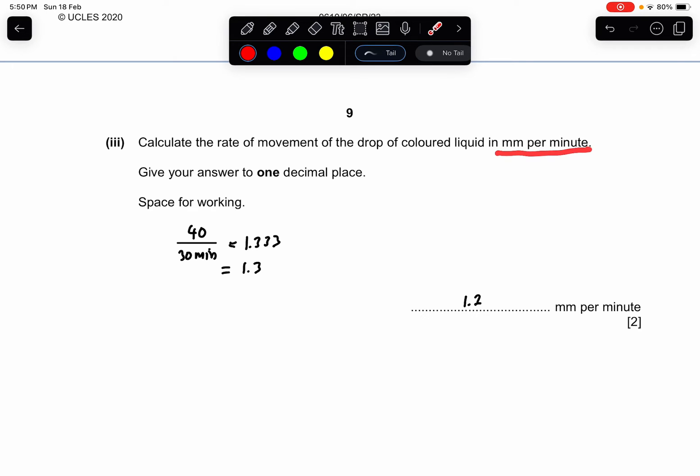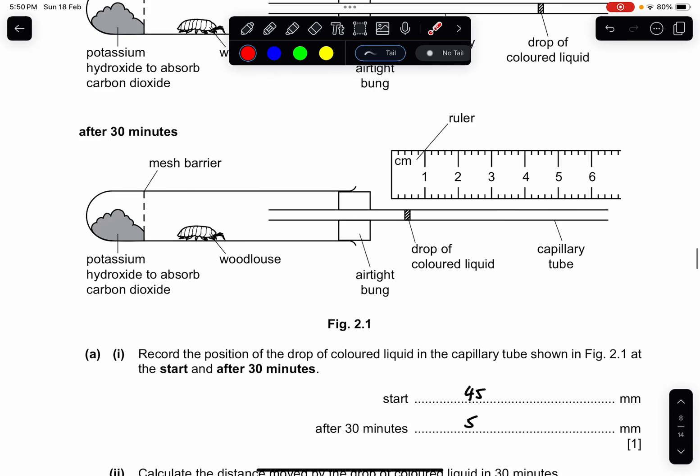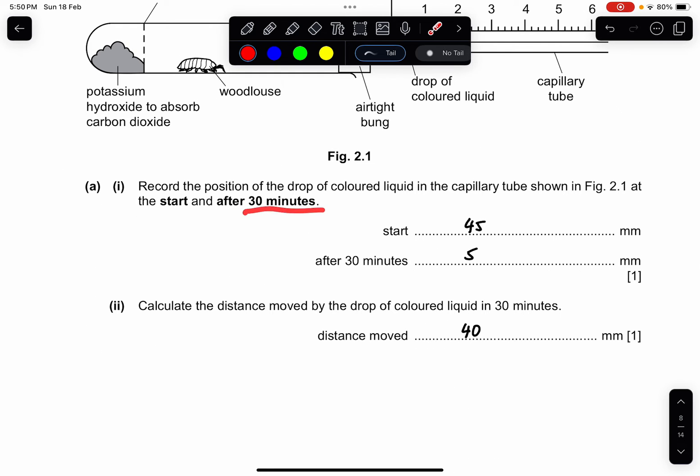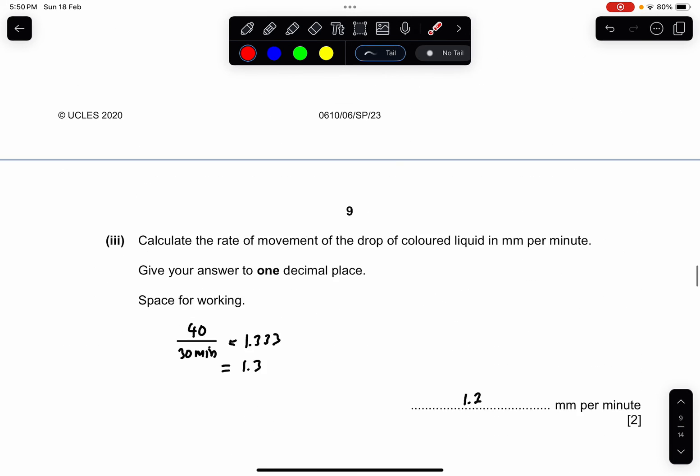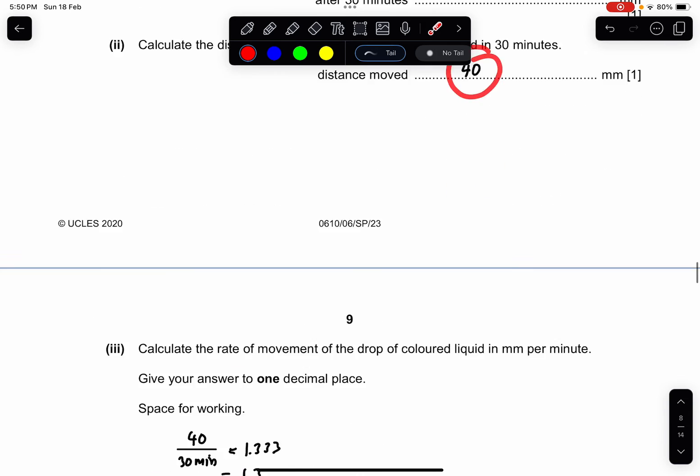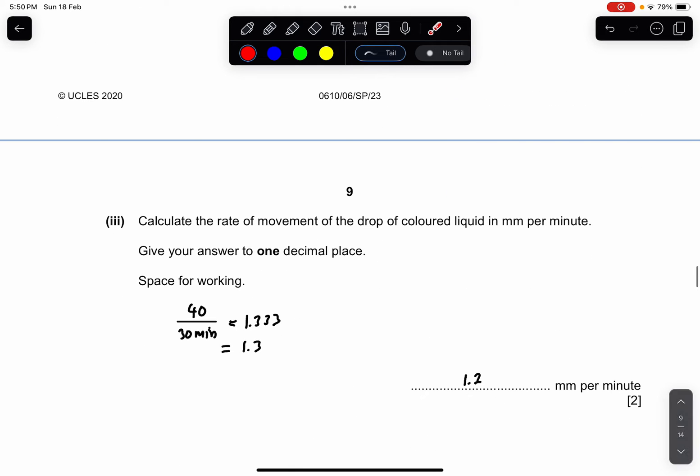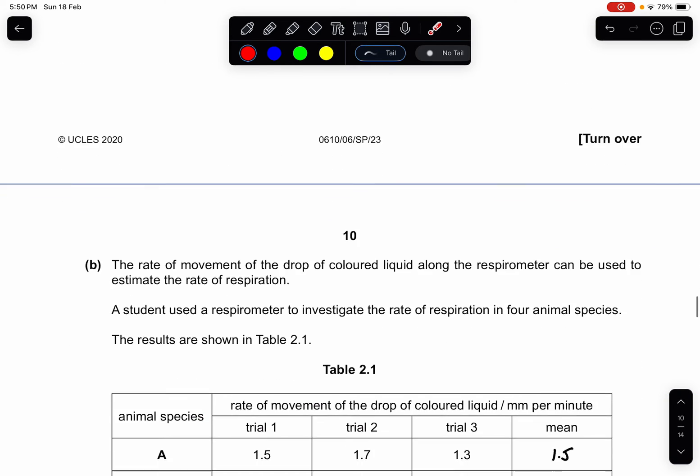Part 3: Calculate the rate of movement of the drop of colored liquid in mm per minute. The keyword is per minute. So do not change your units to seconds without the question saying. It says per minute and you know the whole journey is about 30 minutes. So I will take 40 which is the difference, divide by 30, I get 1.333 but you're not done yet. They say in 1 decimal place. So you round off to 1.3 mm per minute.